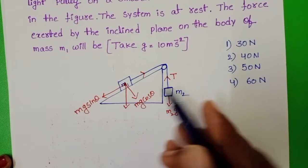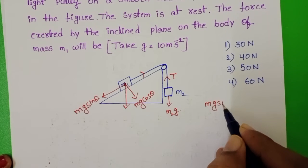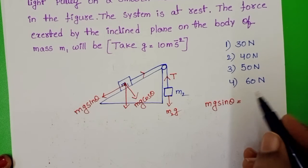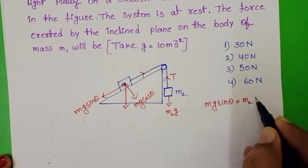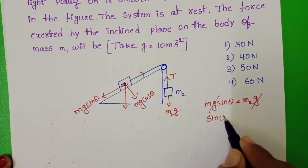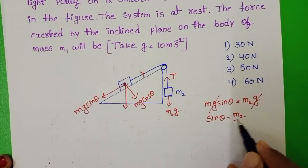So system is in equilibrium means Mg sin theta equals tensional force and tensional force equals M2g. On both sides g gets cancelled. Sin theta equals M2 by M1.